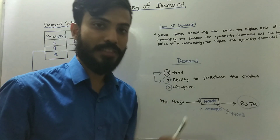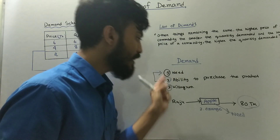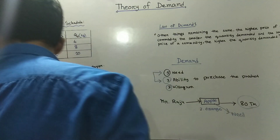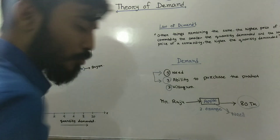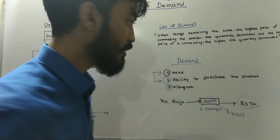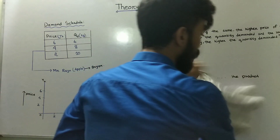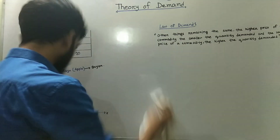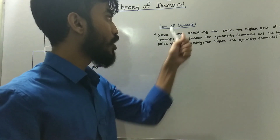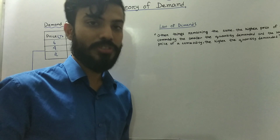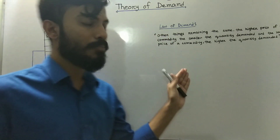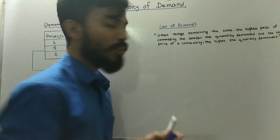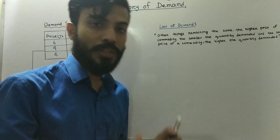The third element is willingness. Now, we will know the law of demand. The law of demand states that other things remain the same — that is, when other things are constant.